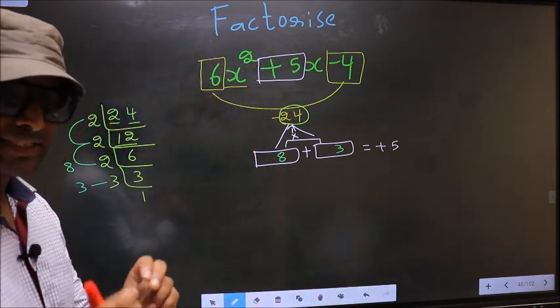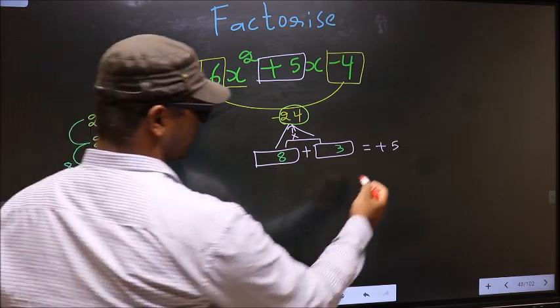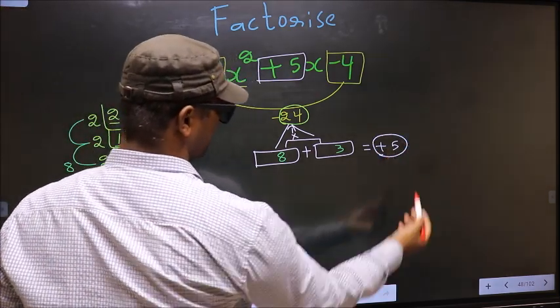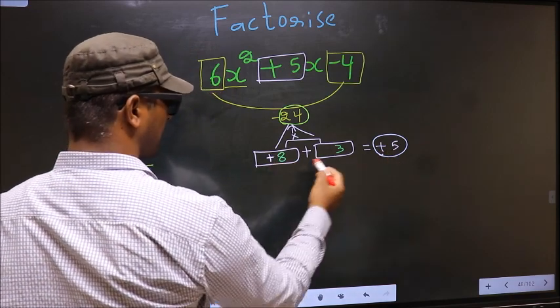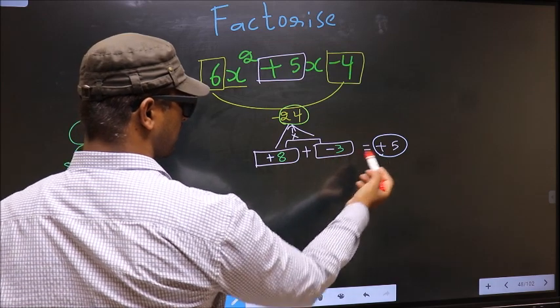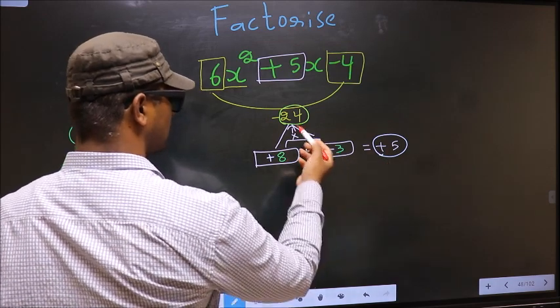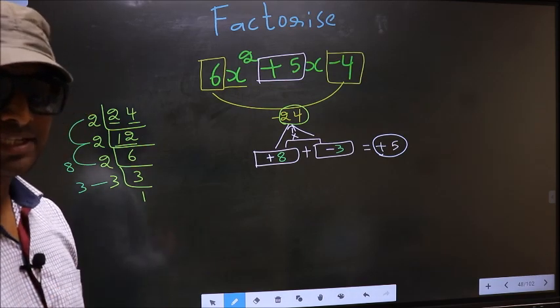Now we should adjust the signs. What I mean is, we should get +5. To get +5, we should put + here and - here. +8 - 3 is +5, and +8 × -3 is -24. So we have adjusted the signs.